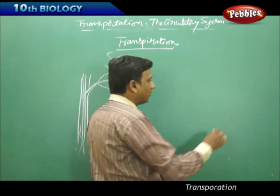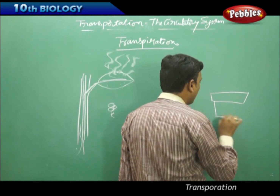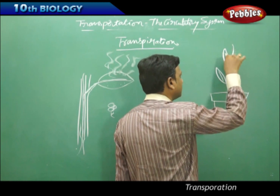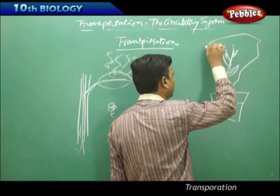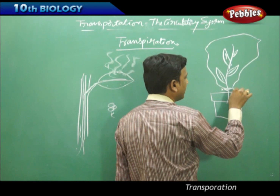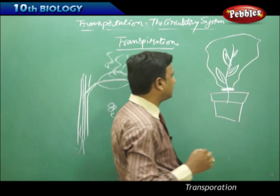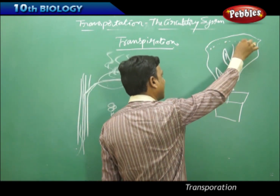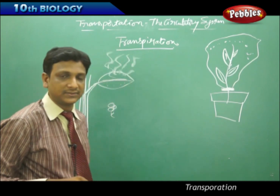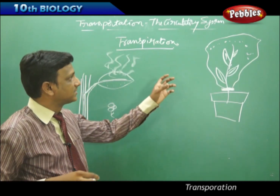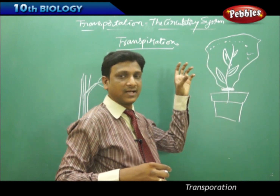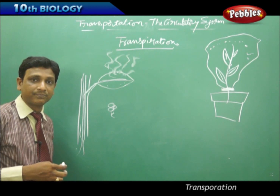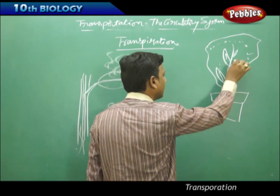You can observe this through a simple activity. Take a potted plant and cover it with a polythene cover, the kind used for making bouquets. Tie it up and place the setup in sunlight for some time. You will observe that small water droplets gather inside the surface of the cover. Sometimes you will find liquid water collected there too, as many droplets join together. This water comes from the leaves by transpiration.